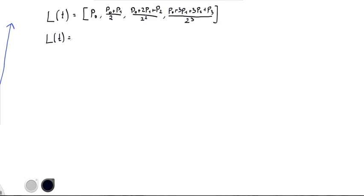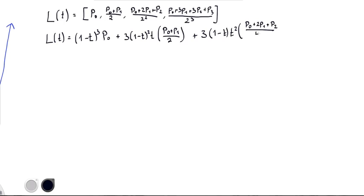So L of T, just by definition, is going to be 1 minus T cubed P0 plus 3 times 1 minus T times T times P0 plus P1 all over 2, plus 3 times 1 minus T, T squared, here, P0 plus 2P1, 2P1 plus P2 all over 4.